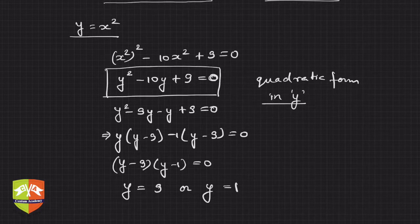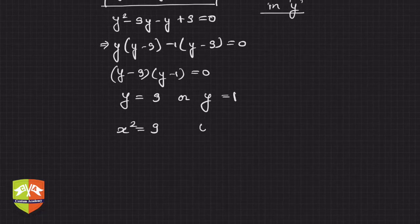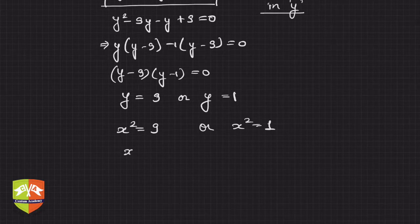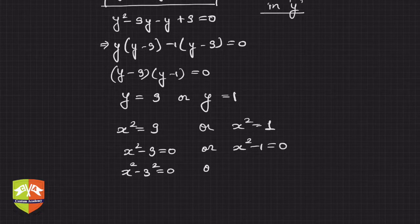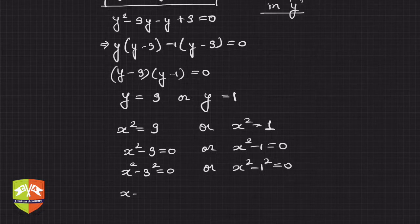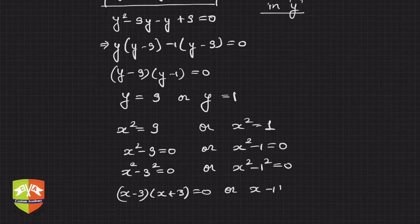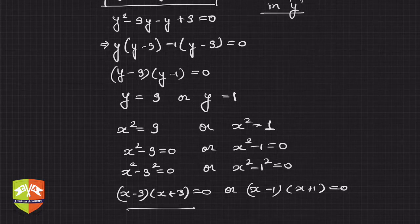We never wanted y — we wanted x. So substituting back: x squared equals 9 or x squared equals 1. That means x squared minus 9 equals 0, or x squared minus 1 equals 0 — which we can write as x squared minus 3 squared equals 0 or x squared minus 1 squared equals 0. Factorizing: (x minus 3)(x plus 3) equals 0, or (x minus 1)(x plus 1) equals 0.